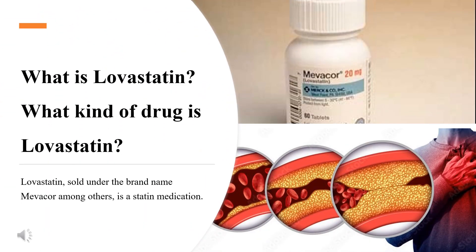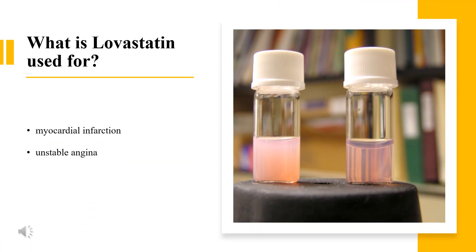What is Lovastatin, and what kind of drug is it? Lovastatin, sold under the brand name Mevacor among others, is a statin medication. Statins in general are lipid-lowering medicines that work through HMG-CoA reductase inhibition. They are used together with diet to treat high blood cholesterol and reduce the risk of cardiovascular events including myocardial infarction and stroke. Lovastatin can be seen as a natural statin, which is mainly produced by Aspergillus terreus.